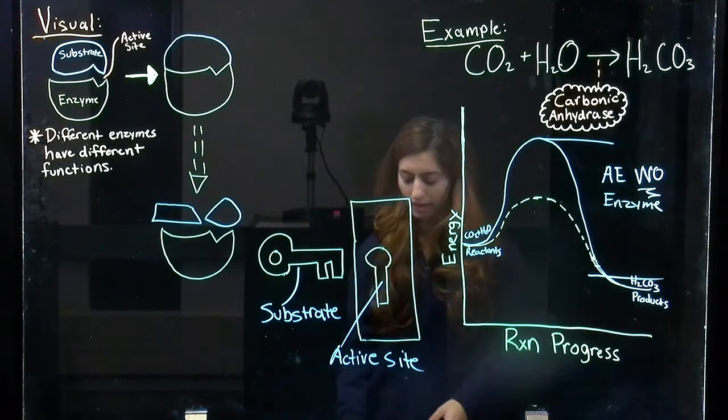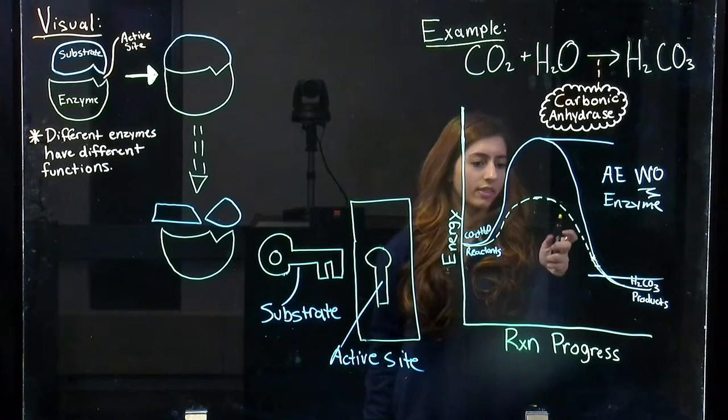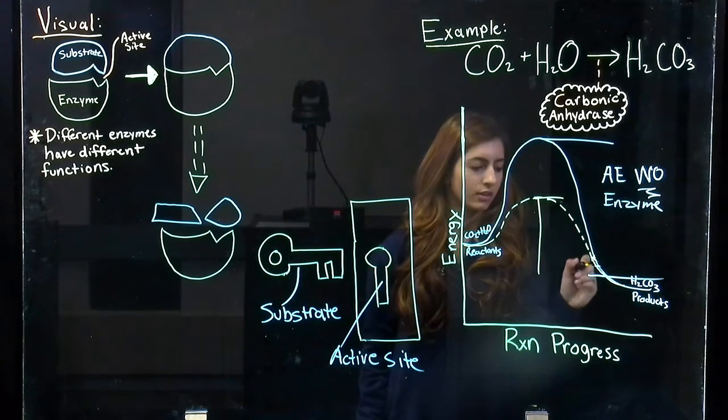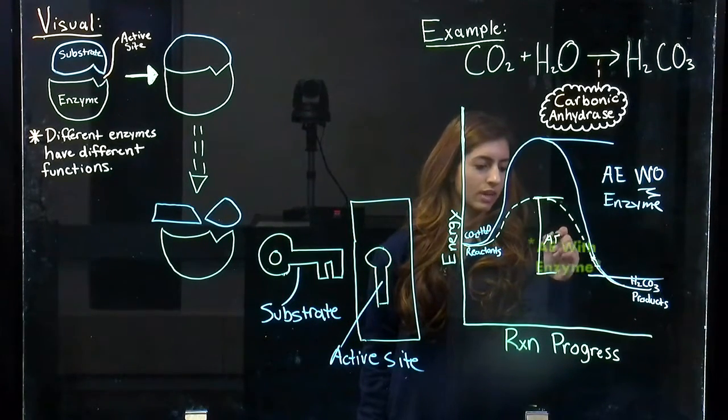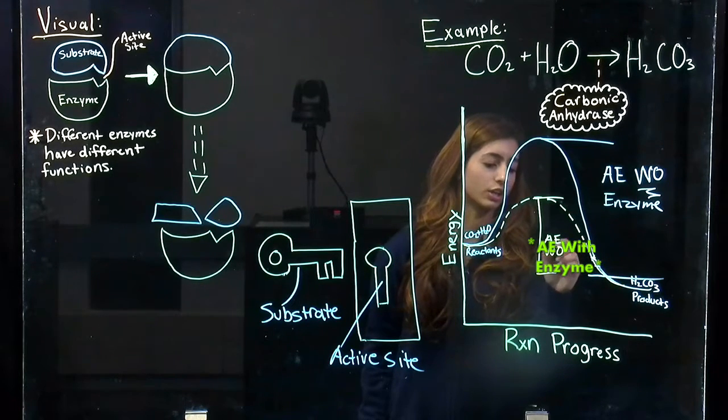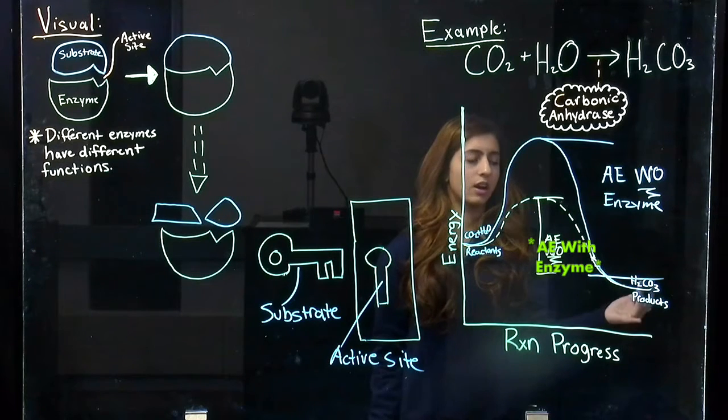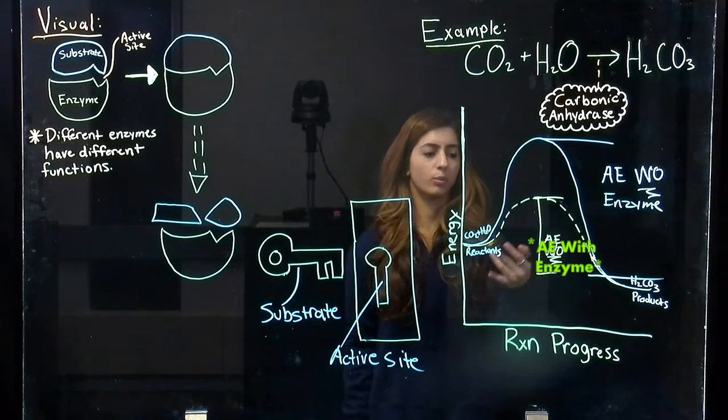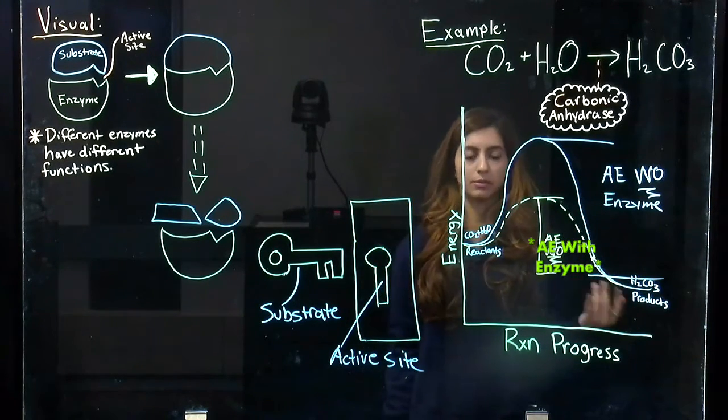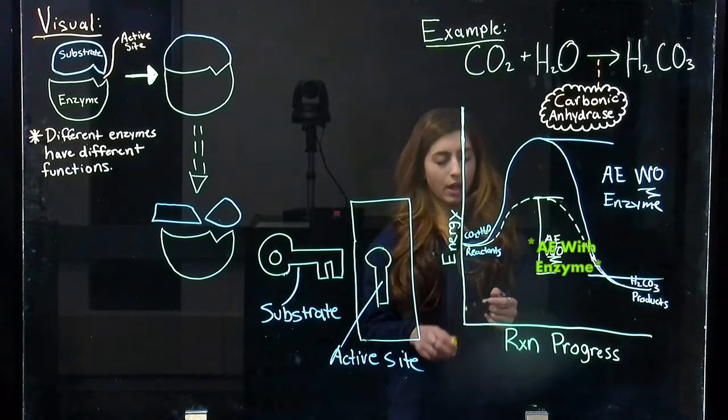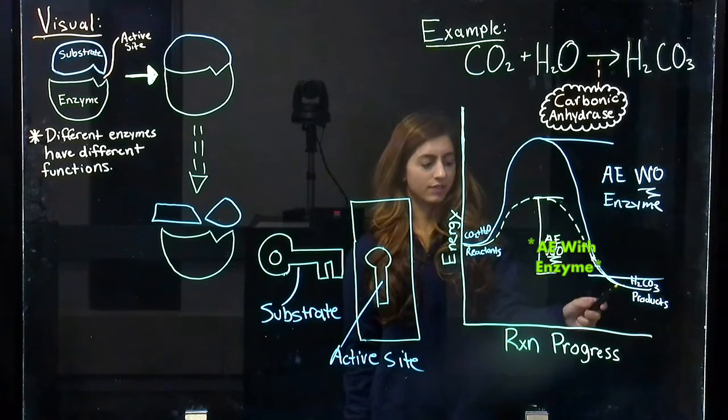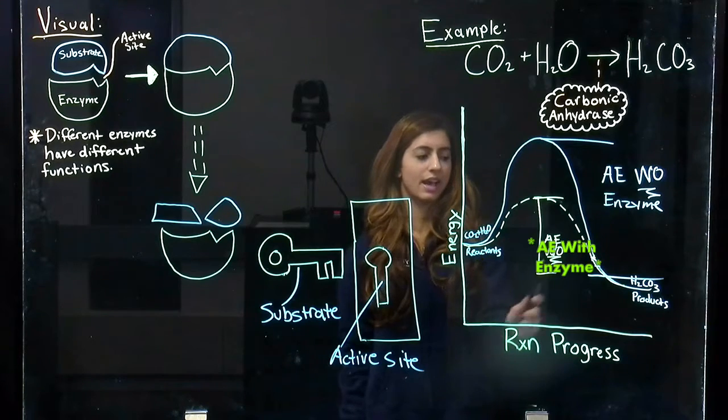Whereas the activation energy with the enzyme is lower. And therefore the reaction occurs quicker. And if our body was not able to carry out this reaction fast enough with the assistance of the enzyme, we would not be able to sustain life as our blood pH would be off. However, you can still see that with the assistance of the enzyme, we still start with the same reactants and end with the same products.